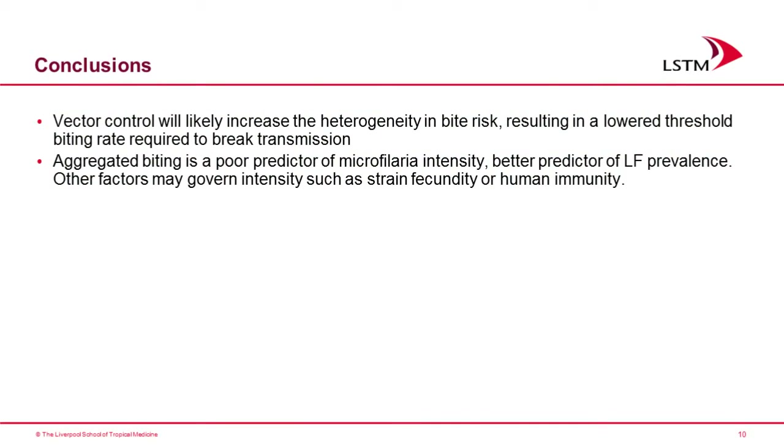Aggregated biting is a relatively poor predictor of microfilaria intensity but a better predictor of LF prevalence. There are other non-spatial factors that will govern intensity, such as strain fecundity or human immunity. This result is supported by work of ours where we found that individuals with very high microfilaria intensity actually had fewer haplotypes when looking at genetic diversity within the microfilaria, compared to those with low-density infections — pointing to human immunity or possibly strain fecundity.